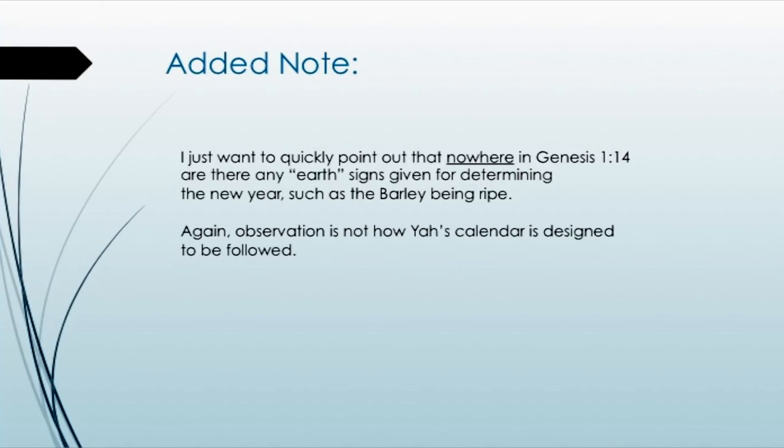Nowhere in Genesis 1:14 are there any earth signs given for determining the new year, such as the barley being ripe. That is not in Torah. That is a doctrine of man not found in the precedent given in Genesis 1. Observation is only for consent or agreement from the three witnesses — the sun, the moon, and the stars — at the equinox, telling you that when your 364 days is up, you may begin the next year on that Wednesday following the vernal equinox.